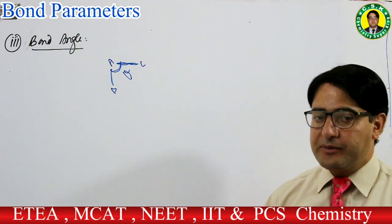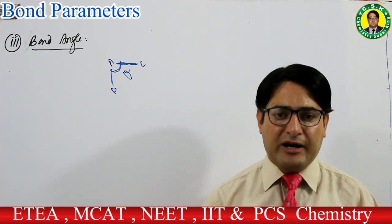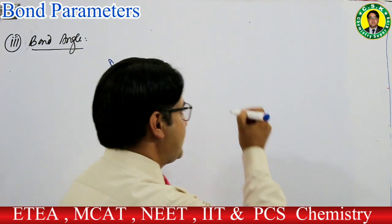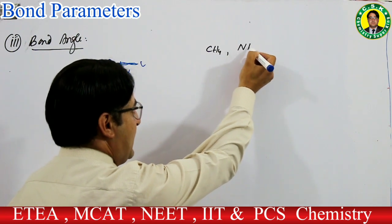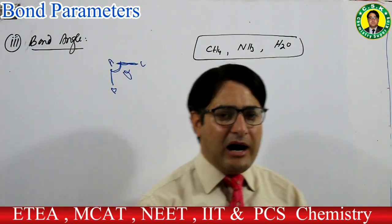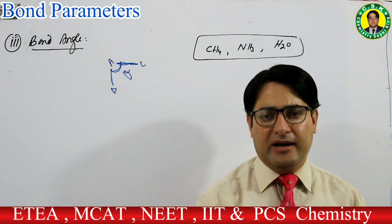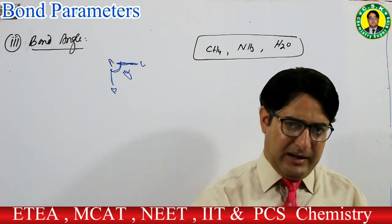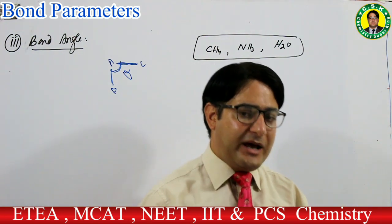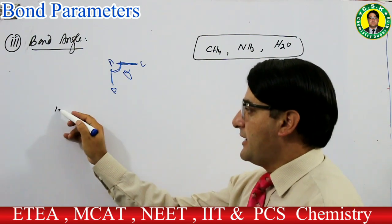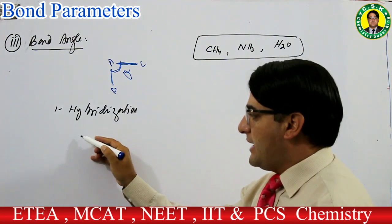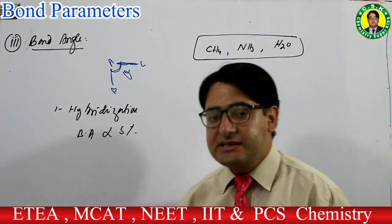کسی molecule کا bond angle ہم کیسے find کریں گے؟ تین important steps ہیں۔ مثال: methane، ammonia، water — کس کا bond angle سب سے زیادہ ہے؟ پہلا rule: hybridization find کرنی ہے۔ جتنا s character زیادہ ہوگا bond angle اتنا ہی زیادہ ہوگا — sp3 میں کم، sp2 میں زیادہ، sp میں اور زیادہ۔